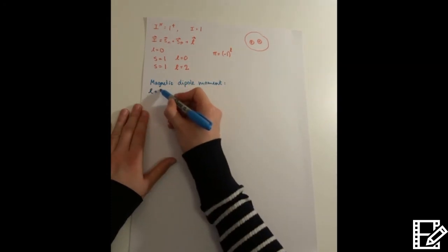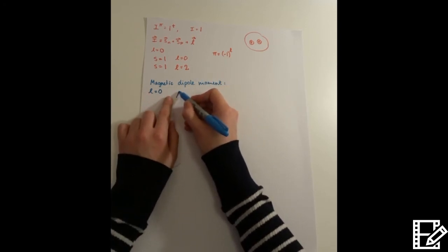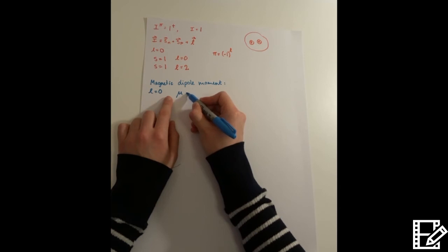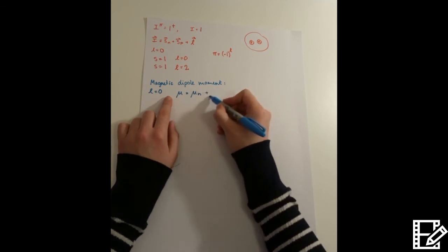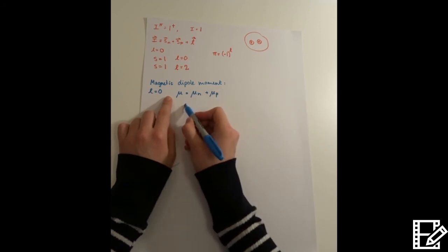Now, if l equals 0, of course, that doesn't contribute. So then we have a magnetic dipole moment which is only dependent on the magnetic dipole moment of the neutron plus the magnetic dipole moment of the proton. We can obtain an expression for this.